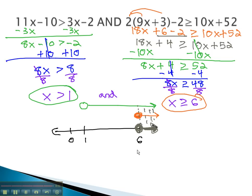In interval notation, our low value is 6 with a square bracket, going up to infinity with a curve bracket, and that solves our compound inequality.